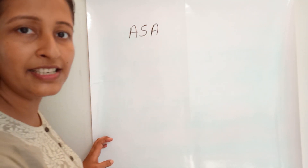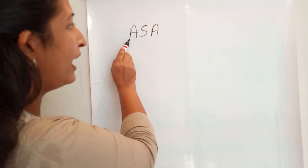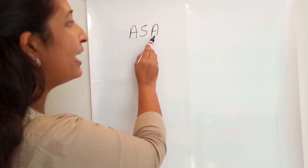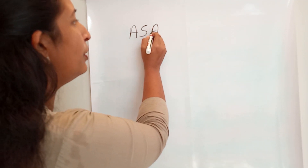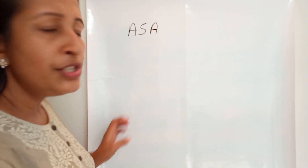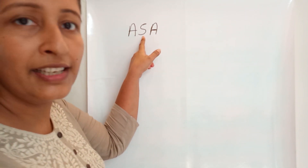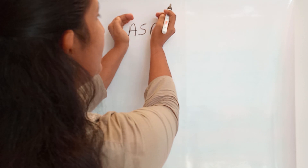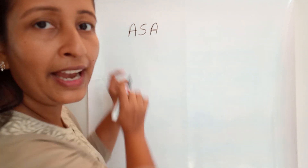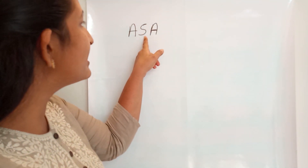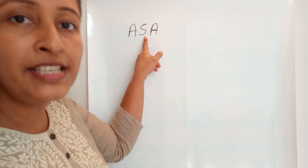ASA congruence criteria. A for angle, S for side, and this A is also for another angle. What is the speciality of this side? This side is included with these two angles, so we can say that this side is the included side.